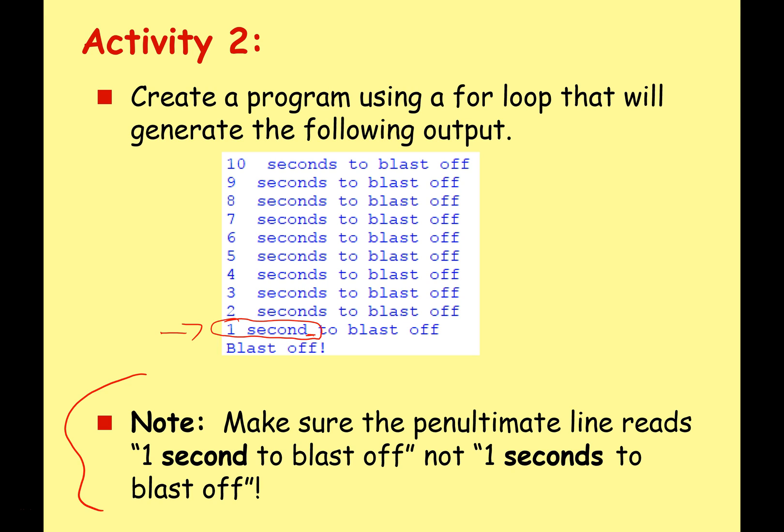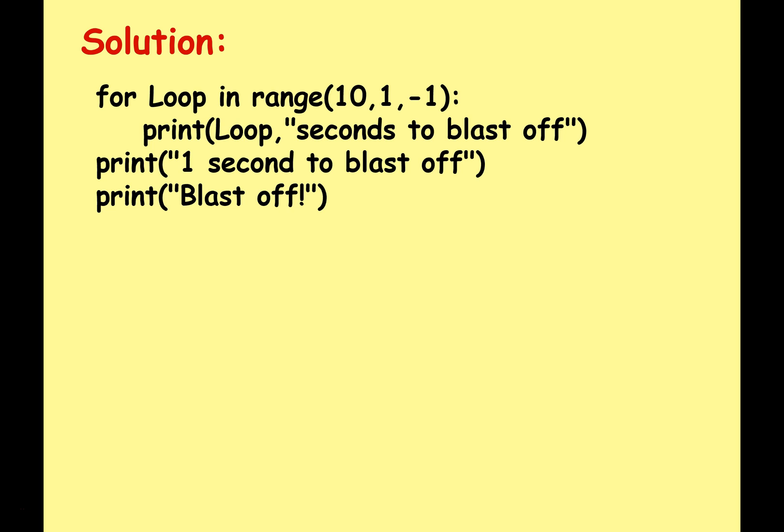Got that done? Brilliant. Let's have a look at a solution. This is how I've done it - you might have done it a slightly different way. For loop in range 10 comma 1 comma minus 1. So we're going to start at 10, we're going to go all the way down technically to 2 because it'll stop when it gets to 1.